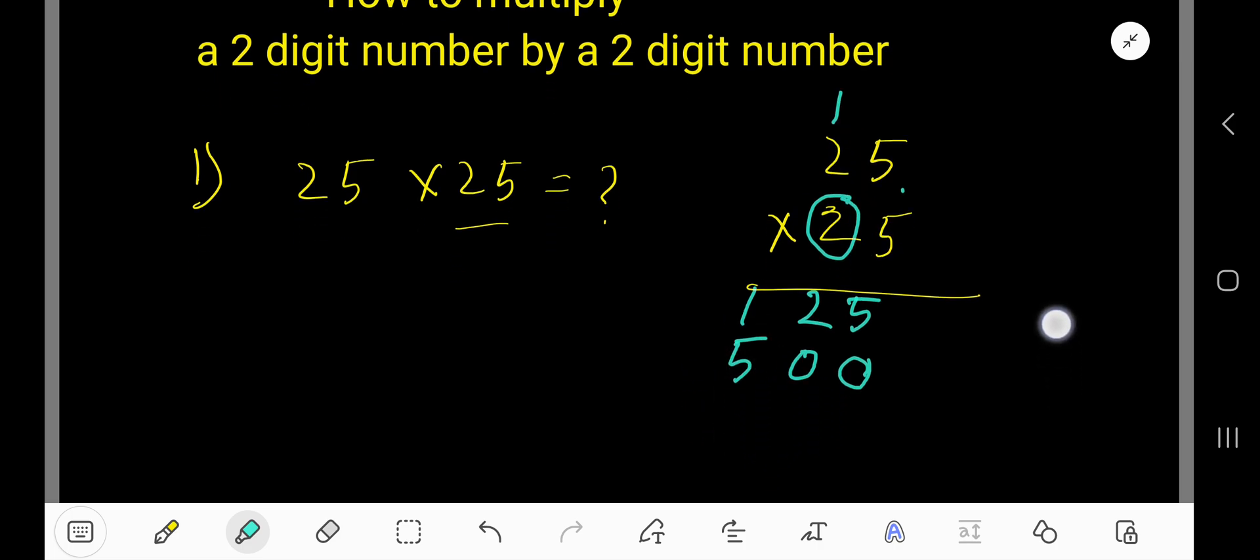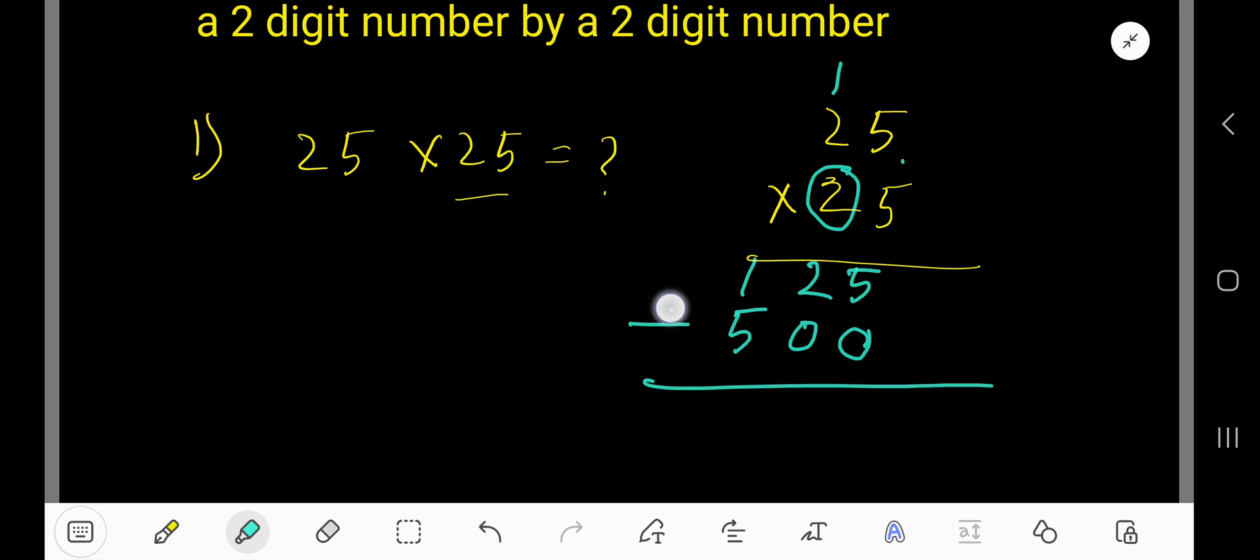Now you have to add: five plus zero is five, two plus zero is two, one plus five is six. Six hundred twenty-five is the answer. So 25 times 25 equals 625.